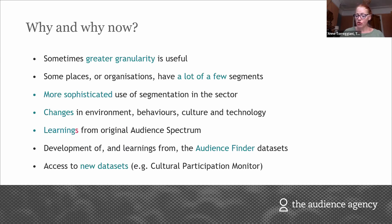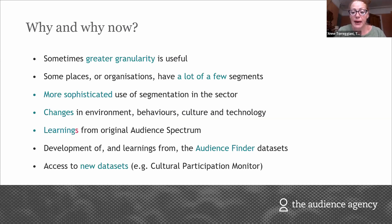Just to remind everybody, Audience Spectrum is a segmentation of the UK population based on their cultural habits, and importantly it's geolocatable, so we can see in which postcodes people with tendencies to have interest in different kinds of culture actually live. There are 10 segments altogether in Audience Spectrum.